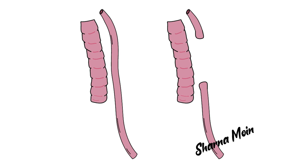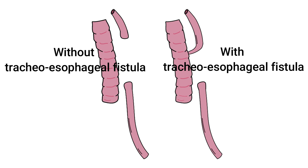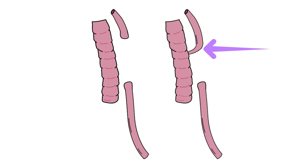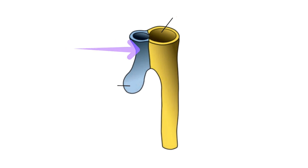This condition is often associated with or without a tracheoesophageal fistula. In addition to the blind-ended pouch, the esophagus might be abnormally connected to the trachea. This abnormal connection is called a tracheoesophageal fistula. It results from either the posterior deviation of the tracheoesophageal septum or the wall of the foregut being pushed anteriorly by mechanical factors.